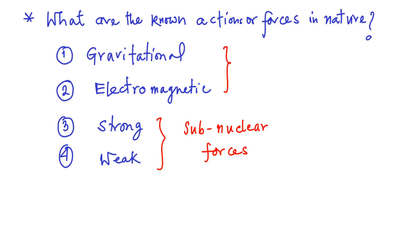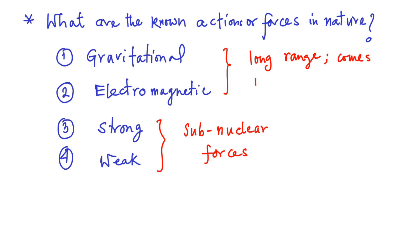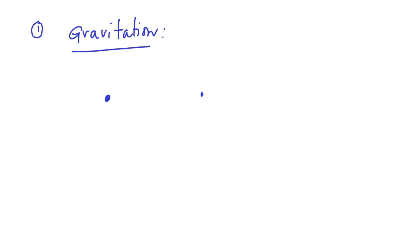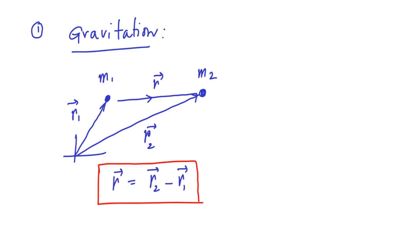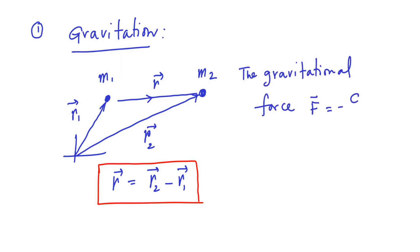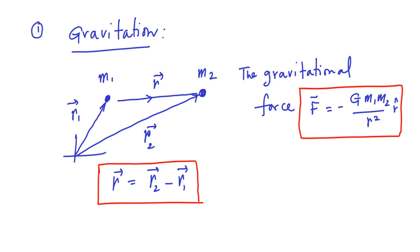On the other hand, gravitational force and electromagnetic force can extend over a long range, and these two come under the domain of Newton's laws. Let us consider the gravitational force between two particles of mass M1 and M2, whose positions are described by position vectors R1 and R2. The vector R is given by R = R2 − R1. The gravitational force is given by F = −G·M1·M2 / R² times R̂.